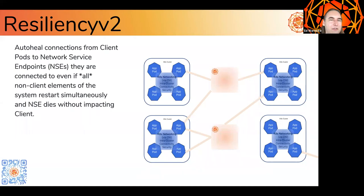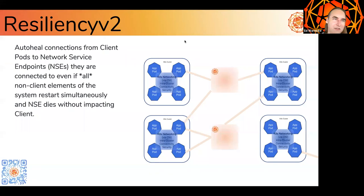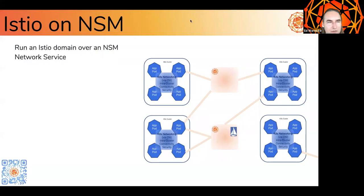On future features: Resiliency v2. Resiliency v1 lets you lose any one aspect of the system and bring it back. With Resiliency v2, we think we can get to a place where you could lose basically everything except the workload simultaneously and still be able to restore your connectivity — just have it be a blip. It's sort of like if you've heard of Chaos Monkey, but you could bring in Chaos Gorilla and smash all the things; when they restart, your connectivity domains come back. We also have folks working on Istio on top of NSM — an Istio domain on top of a Network Service Mesh connectivity domain.